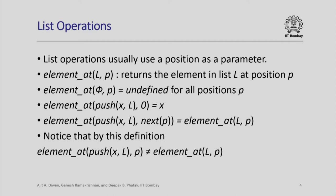If the list is nonempty and is obtained by pushing an element x onto some list l, then the element at position 0 is just the element x itself. So if the value of the list is push(x, l), the element at position 0 is x. Otherwise, element_at(push(x, l), next(p)) — when the position is next(p) for some position p — is the element in the list l at position p.